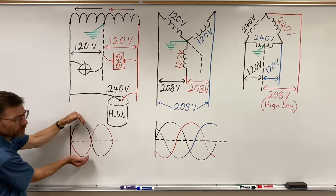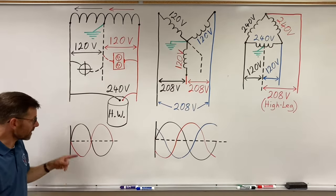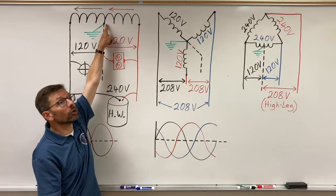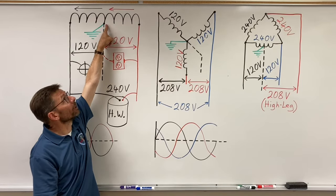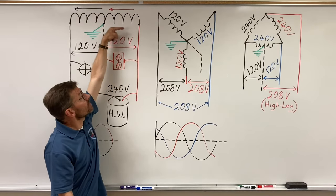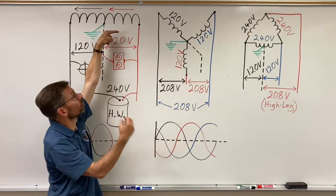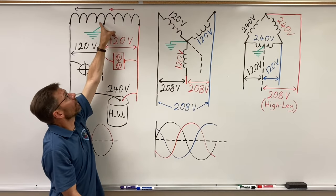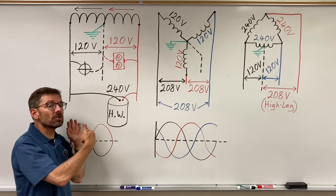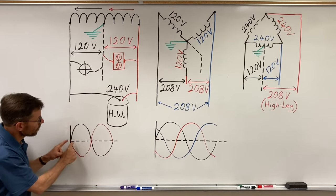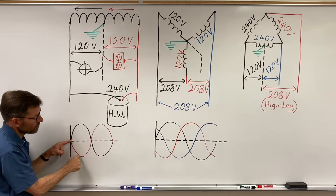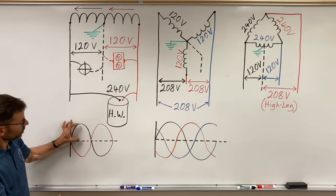Why do I point the sine waves in different directions — why aren't they both going the same way? Because I'm measuring relative to the neutral. From the neutral point of the transformer, looking toward the red wire, the voltage is pushing toward me, so I'm looking up voltage. Looking toward the black wire, I'm looking down voltage. So one appears positive and one appears negative at any moment in time — the black appears positive, the red appears negative.